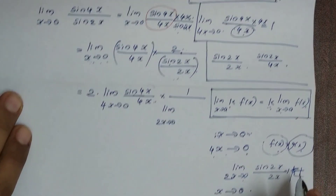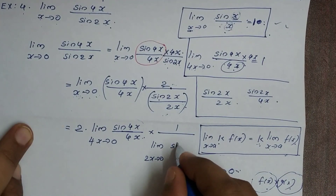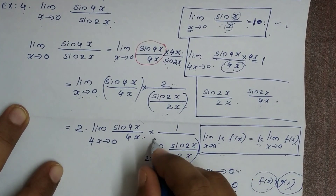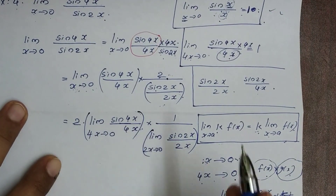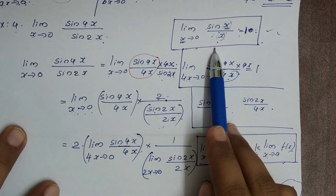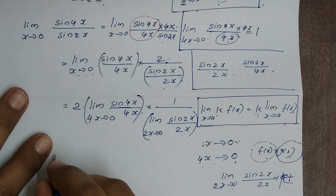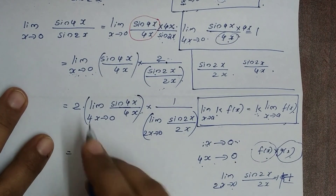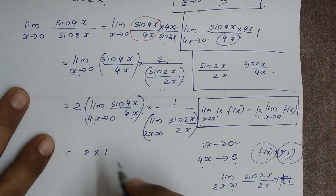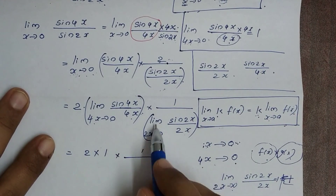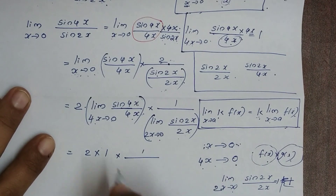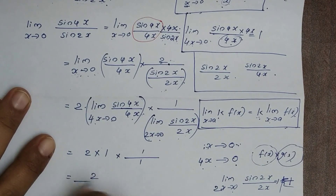2x tends to 0. Sin 2x divided by 2x. Using the formula limit x tends to 0, sin x by x equals 1: limit 4x tends to 0, sin 4x by 4x equals 1, and limit 2x tends to 0, sin 2x by 2x equals 1. So the answer is 2 times 1 divided by 1, which equals 2.